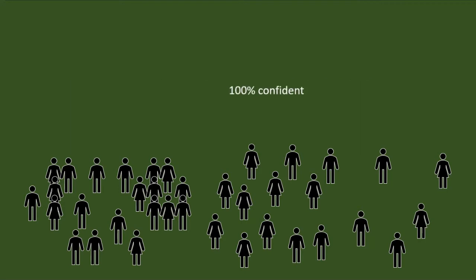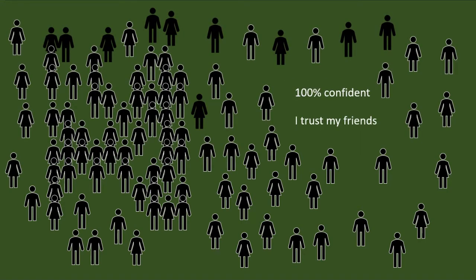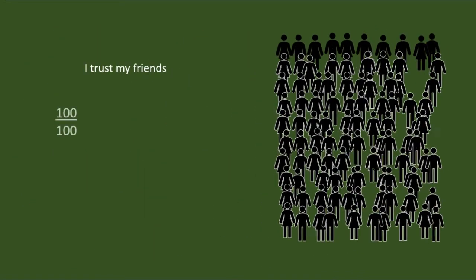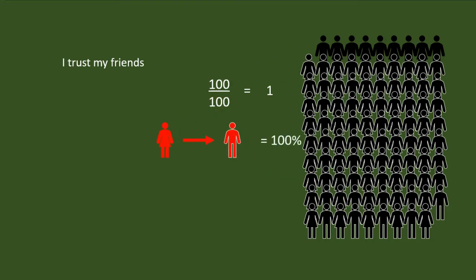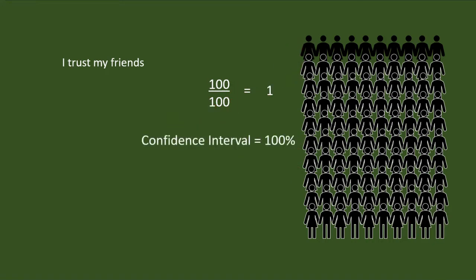Am I 100% confident to say that I trust my friends? 100% confidence — 100 upon 100 — means one. One indicates surety or full confidence. If I have 100 friends, I am confident from my first friend to my last friend. In other words, my confidence interval on trust based on the number of my friends is 100%.